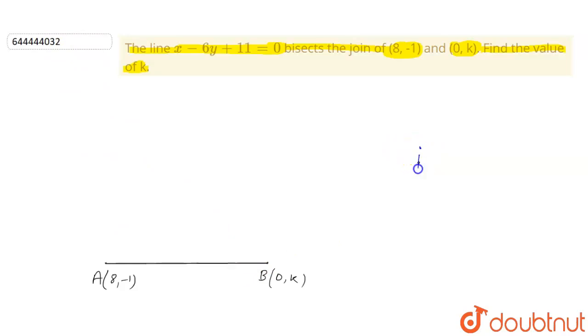If you have a point P which is (x₁, y₁) and another point Q which is (x₂, y₂), then the midpoint of the line joining these two points will be ((x₁ + x₂)/2, (y₁ + y₂)/2). This is the concept.